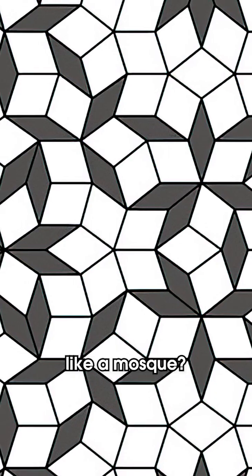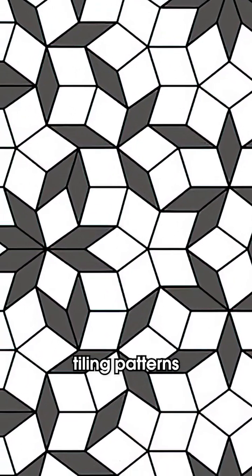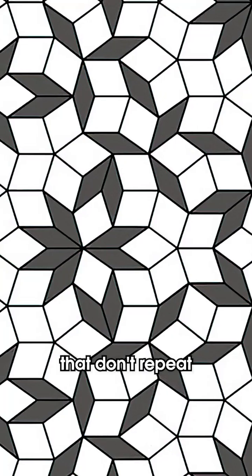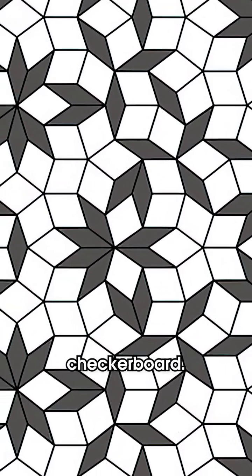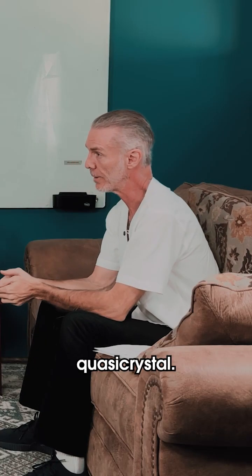Have you ever seen like a mosque and they'll have these tiling patterns that don't repeat like a checkerboard? That's called a quasicrystal.